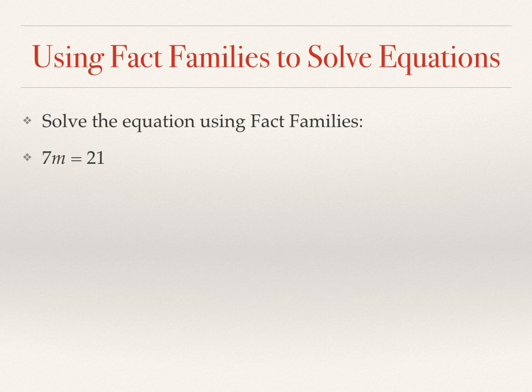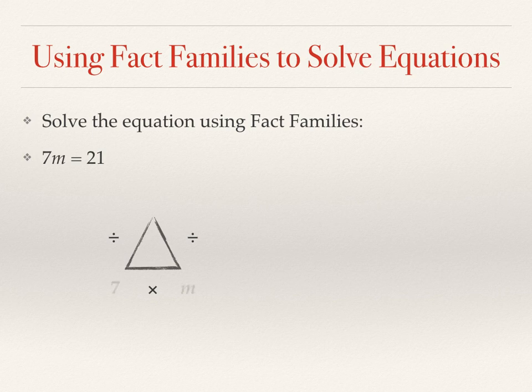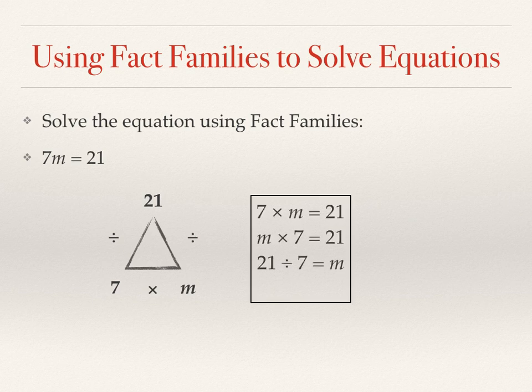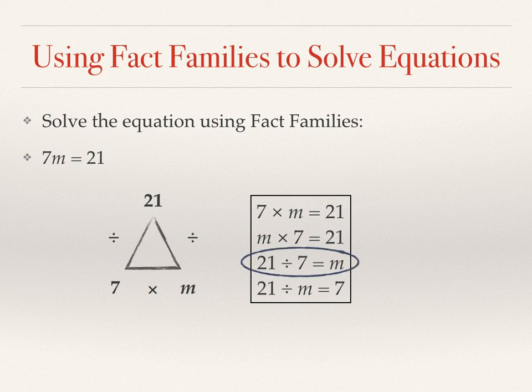So here we have another equation. 7m equals 21. We will use a multiplication and division fact triangle structure. 7 times m is at the bottom and 21 is at the top. Our four equations will come directly from the triangle. And which one is the most direct for solving for the variable? And the solution then, m equals 3.